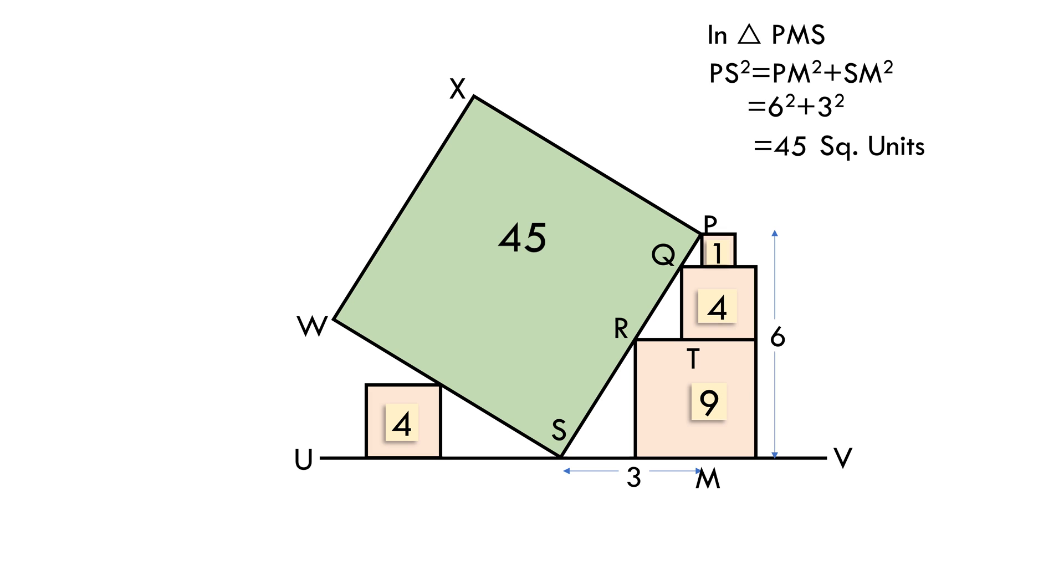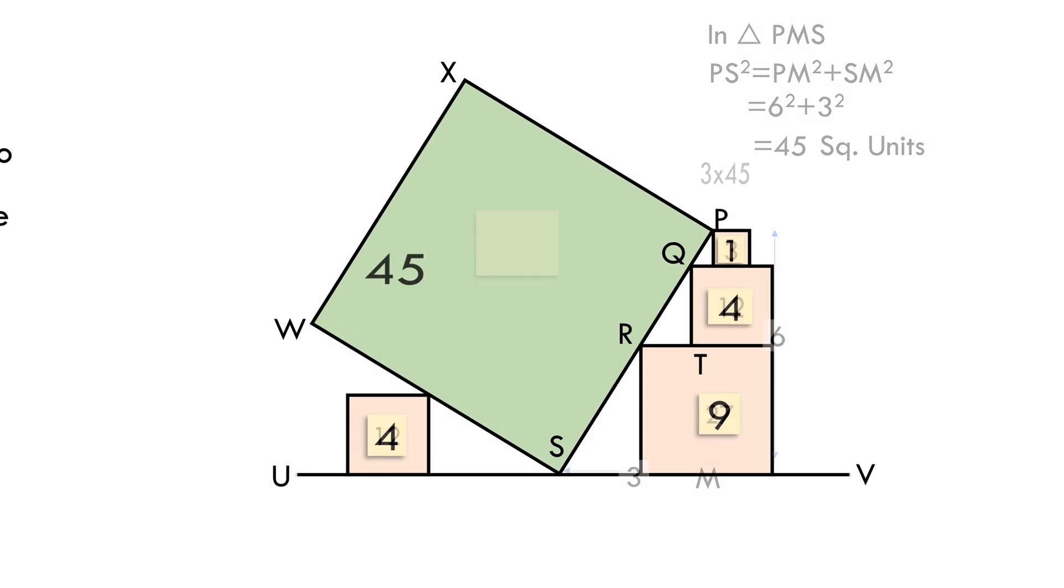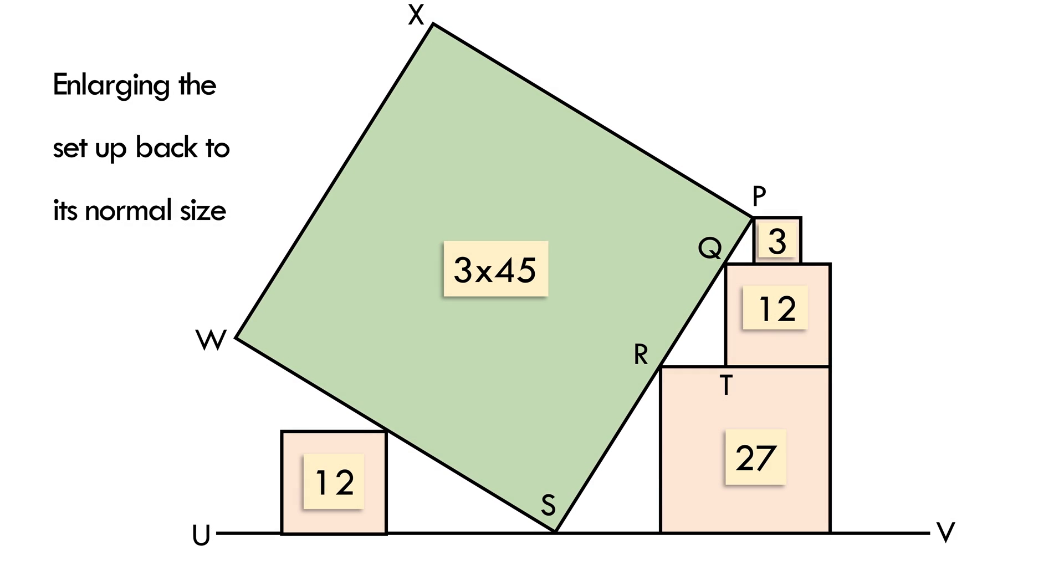Because we had reduced the entire setup by 3 times, we'll enlarge our setup back to its normal size. So the final area of this square will be 45 times 3 equals to 135 square units.